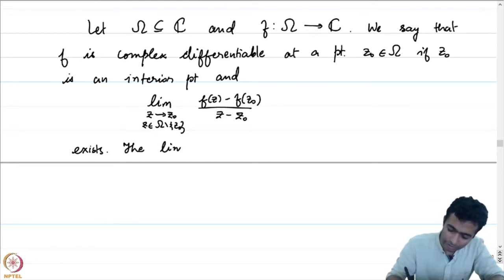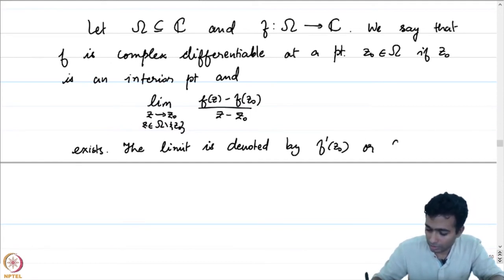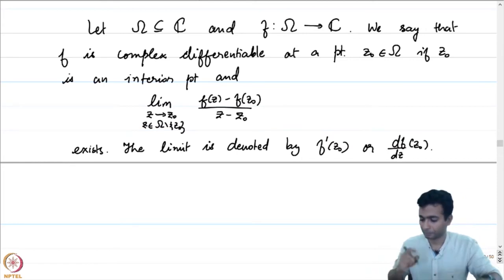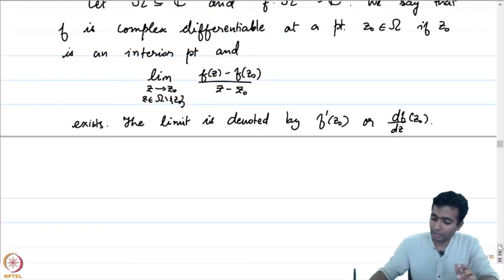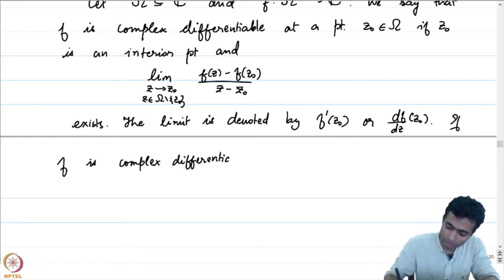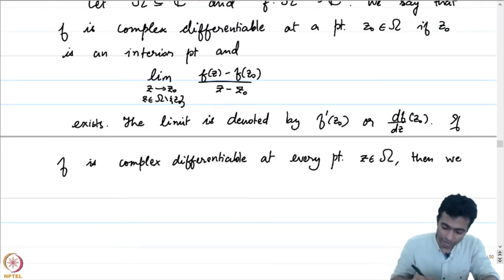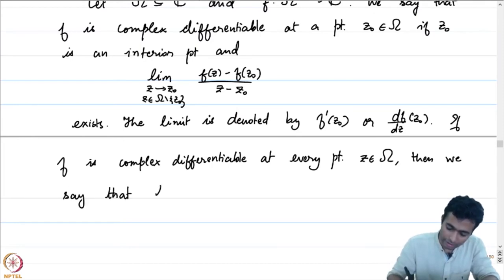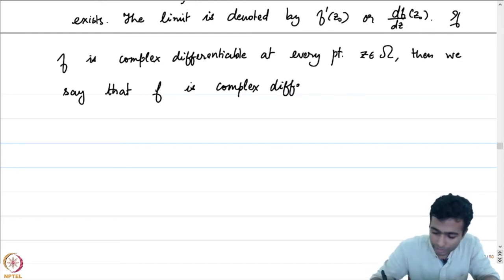If this limit exists, we say f is complex differentiable at z₀. The limit is denoted f′(z₀) or df/dz at z₀, and remember that f′(z₀) is a complex number. If f is complex differentiable on all of ω, we also say f is holomorphic on ω — I will slowly start using that word.